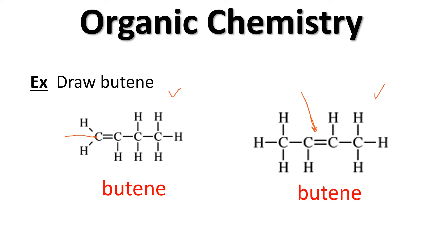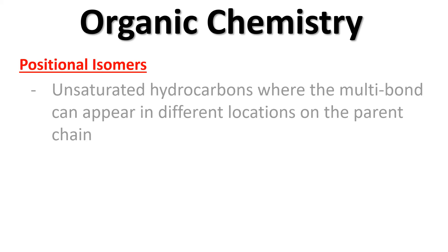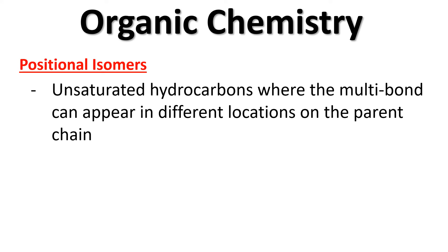We need a number to tell us which bonding spot the multi-bond is in. Rather than numbering carbons, we number the bonding spots: first, second, third. So the molecule with the multi-bond in the first bonding spot is 1-butene, and the other is 2-butene. We've discovered something called a positional isomer — unsaturated hydrocarbons where the multi-bond can appear in different locations on the parent chain. The number can also go between the ending and the prefix; both versions are acceptable.